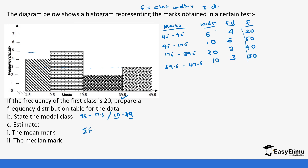To estimate the mean mark we need the sum of fx over the sum of f. That means we need the midpoints (x), which are found by adding the upper limit and lower limit and dividing by 2. For the first class, using original intervals 5 to 9: (9 + 5) ÷ 2 = 7. Using 9.5 and 4.5: (9.5 + 4.5) ÷ 2 = 7 — the same answer either way.